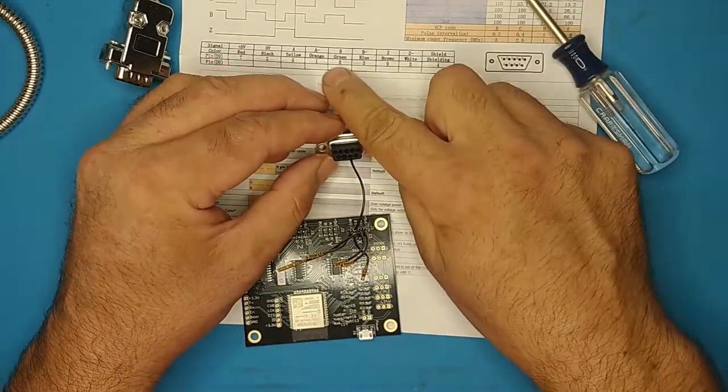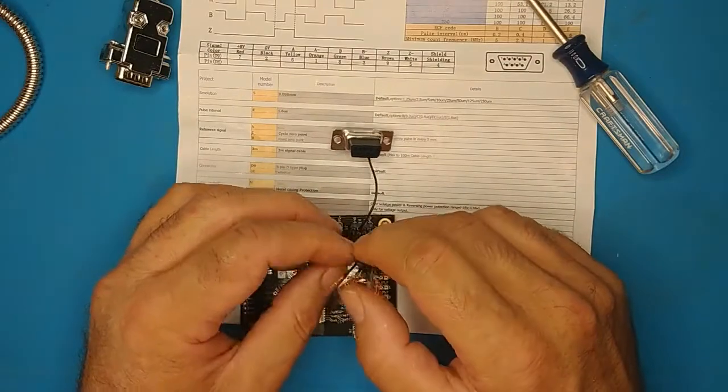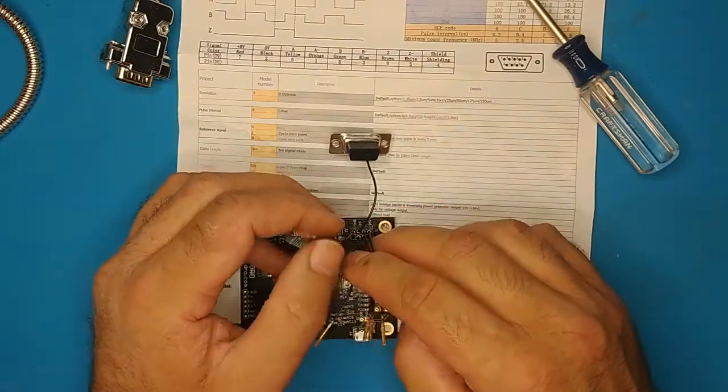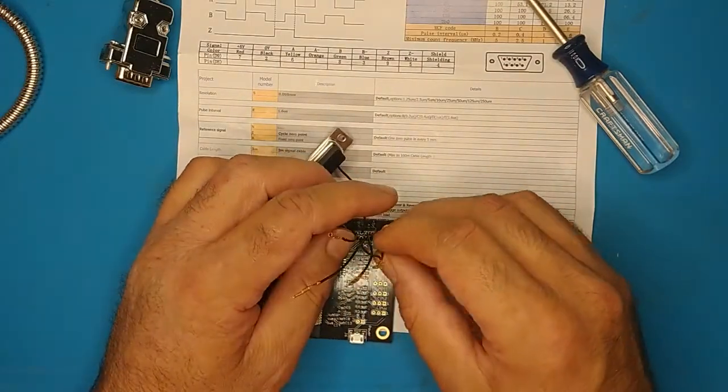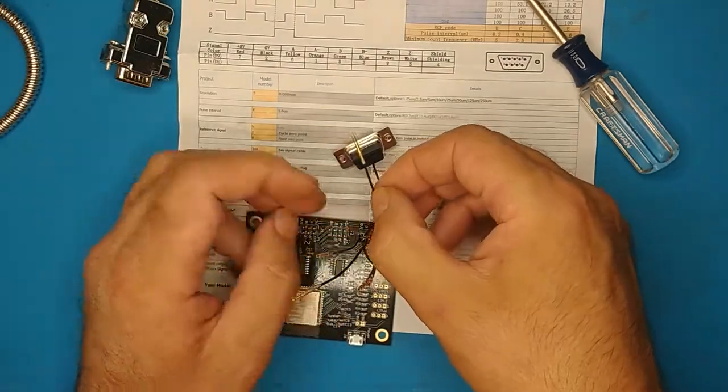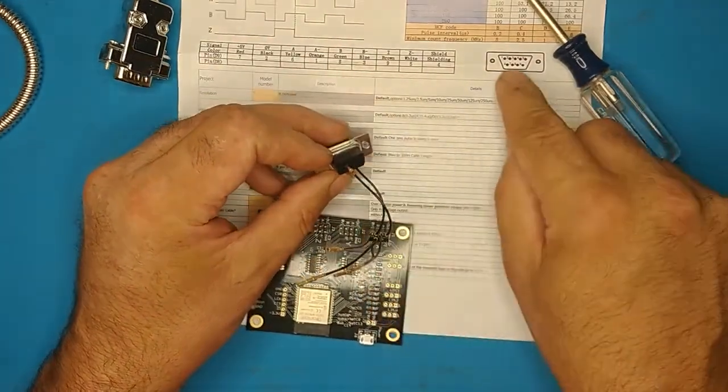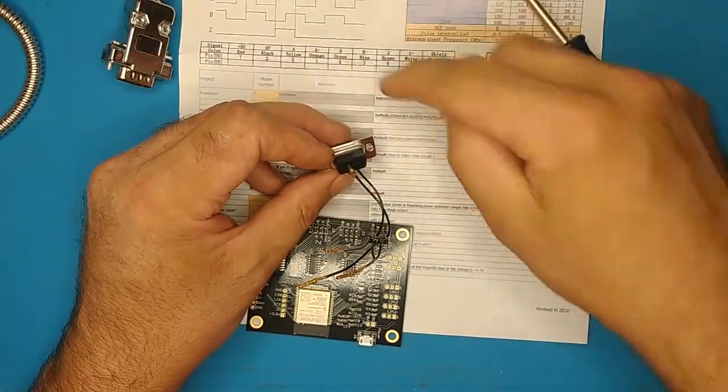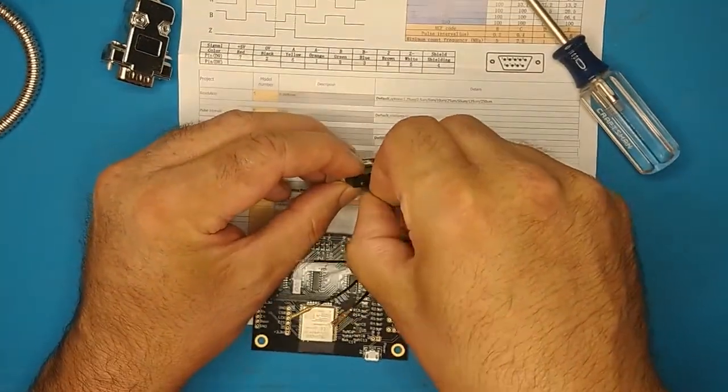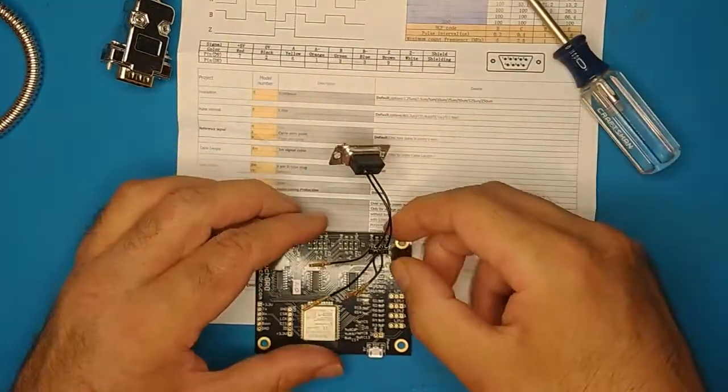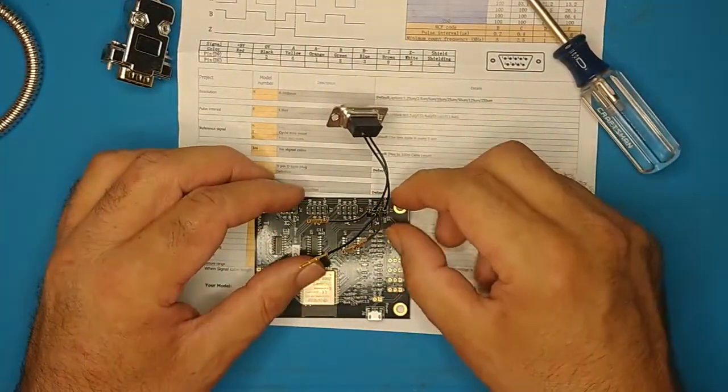Then seven. Seven gets the plus five volt. So string out the plus five volt, which is right there. And seven goes there. Again, double check. Seven, seven, plus five volt, plus five volt. And you just repeat that for the rest of the connectors. You don't need to watch me do it all.